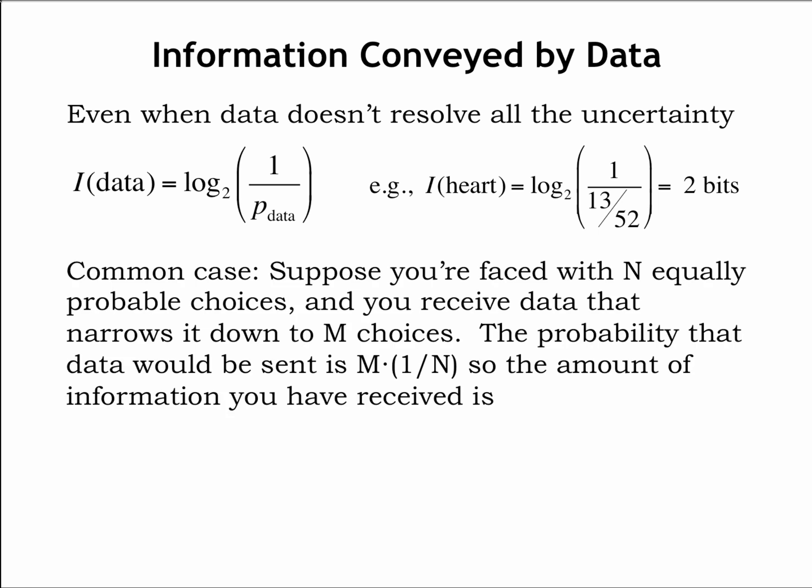This example is one we encounter often. We receive partial information about n equally probable choices, each choice having probability 1 over n, that narrows the number of choices down to m. The probability of receiving such information is m times 1 over n, so the information received is log base 2 of n over m bits.